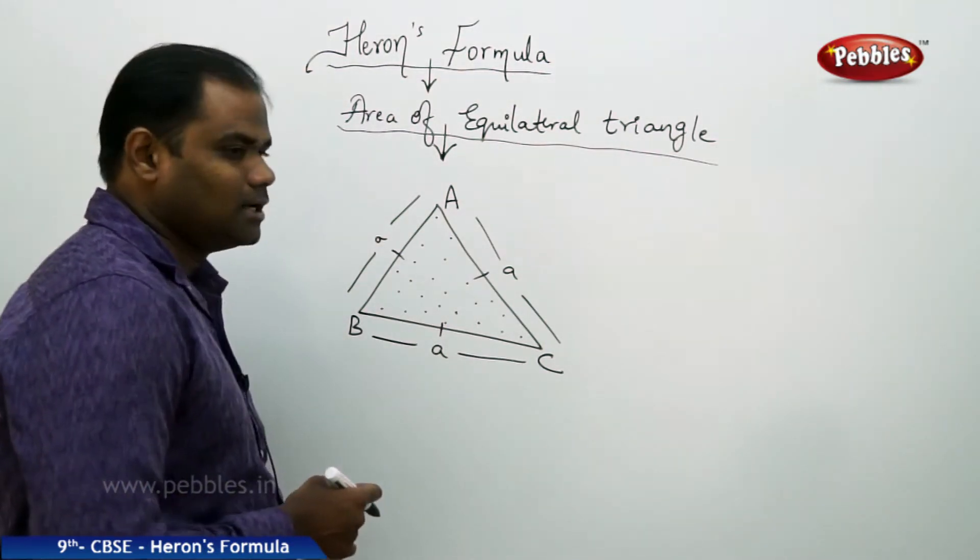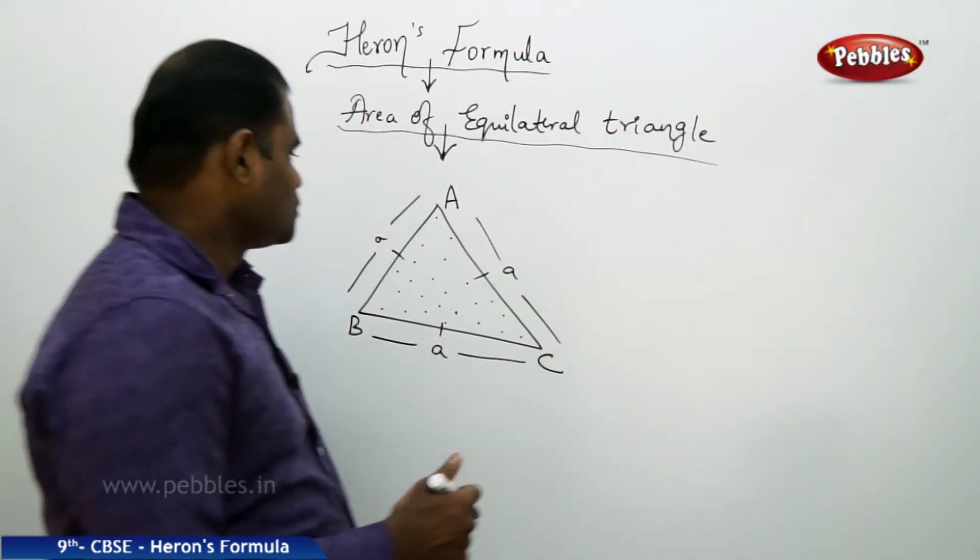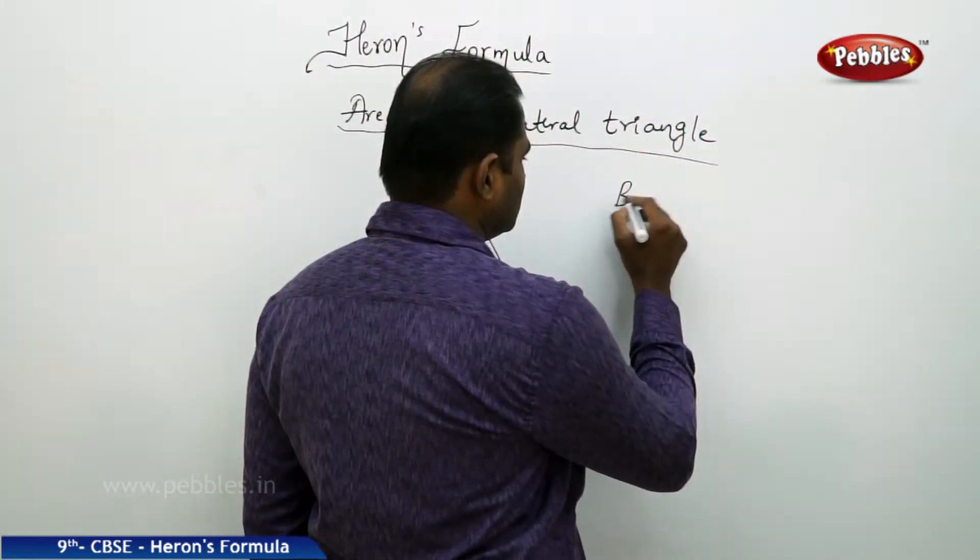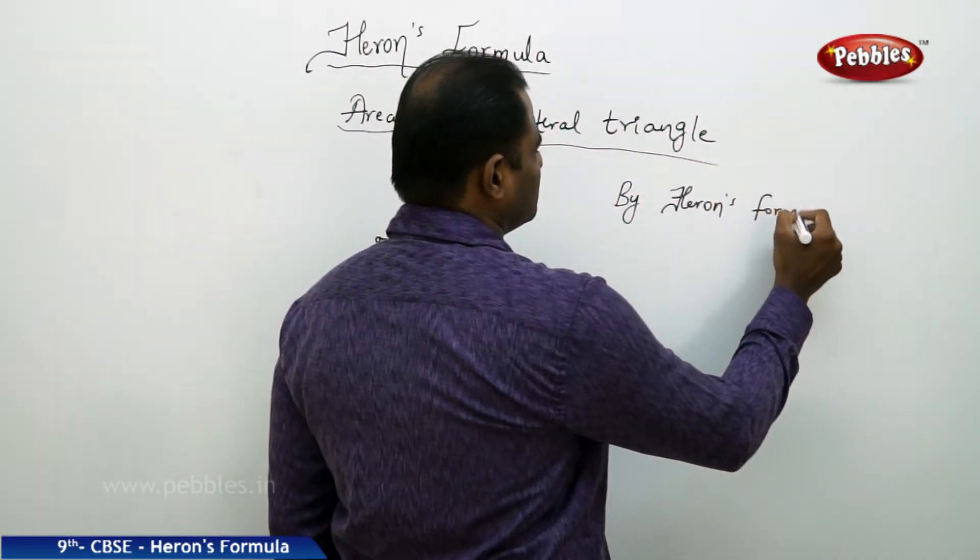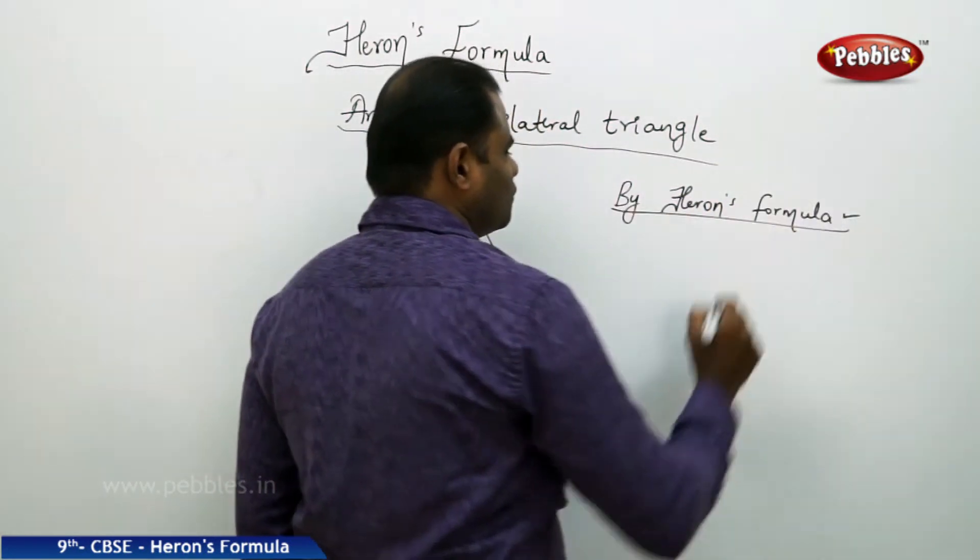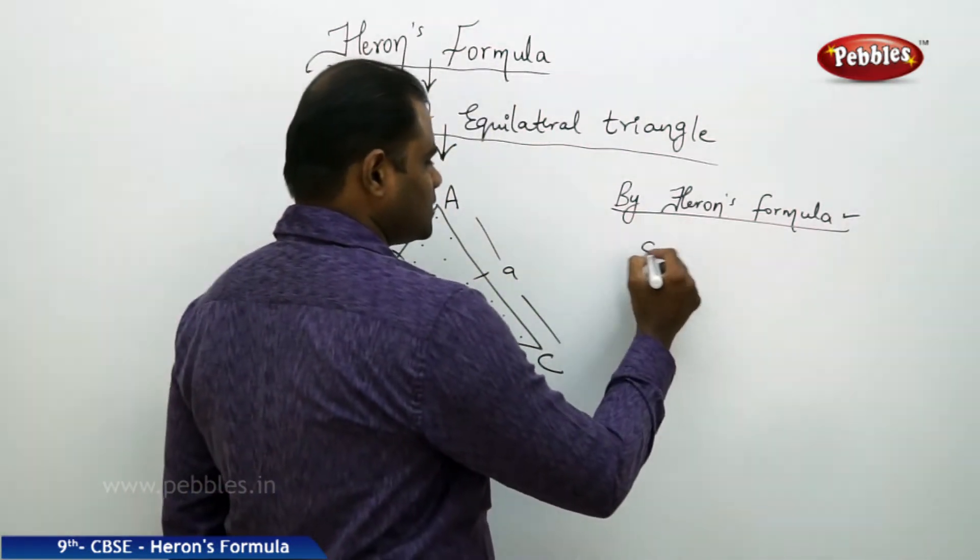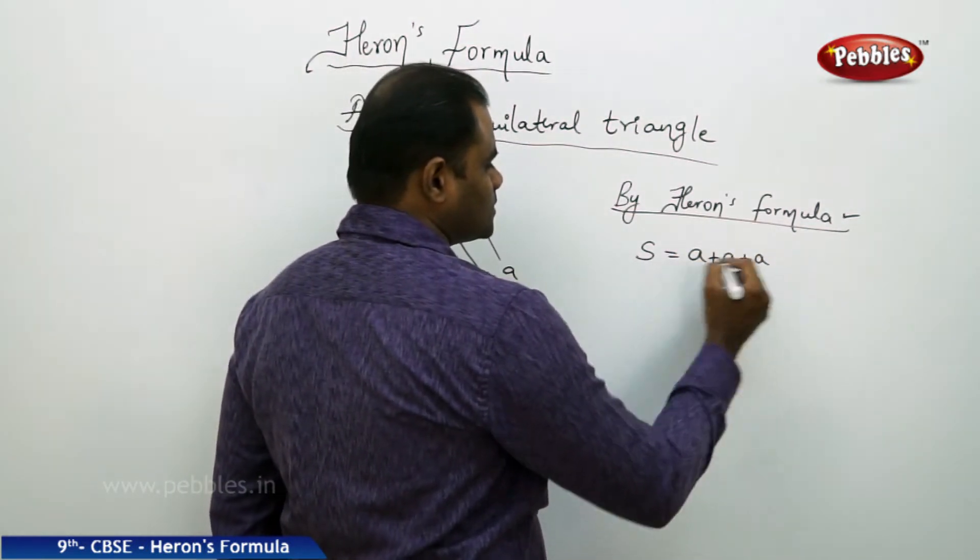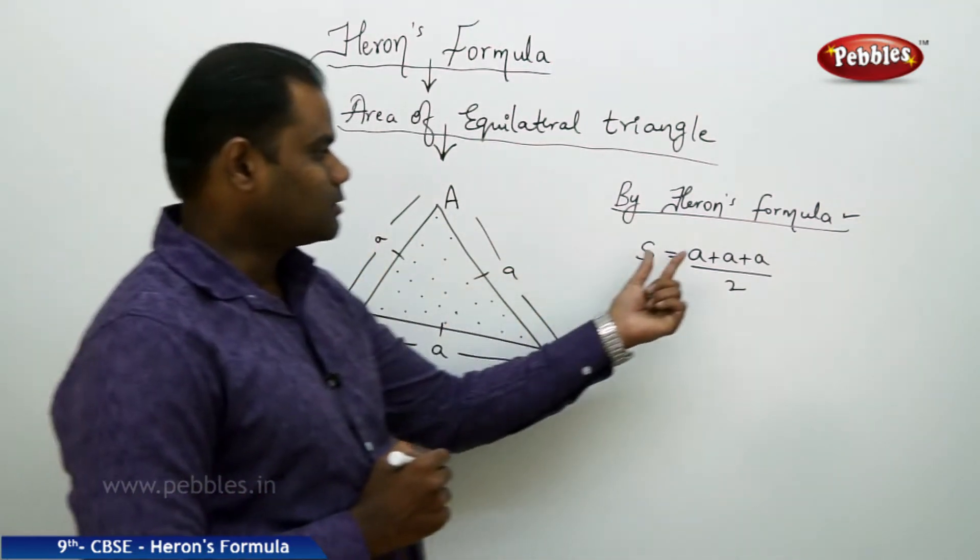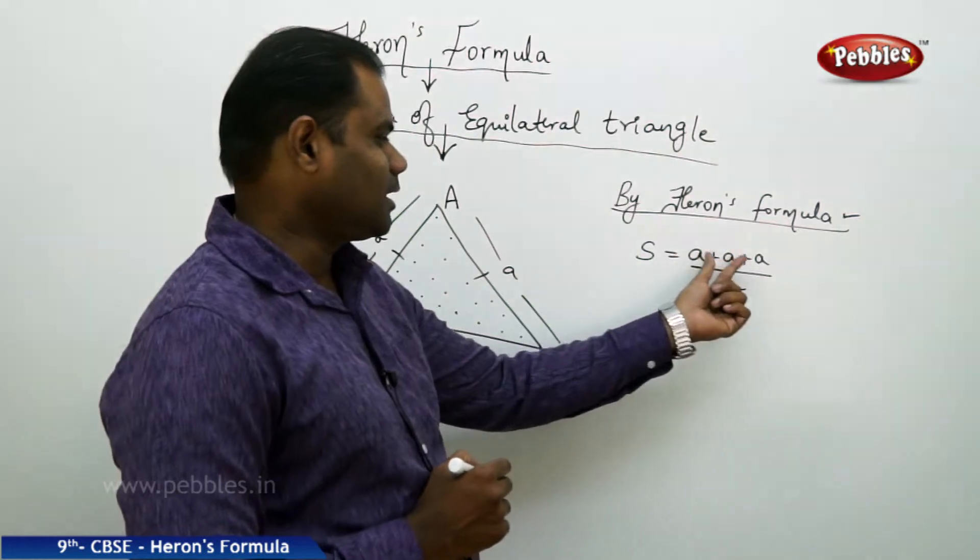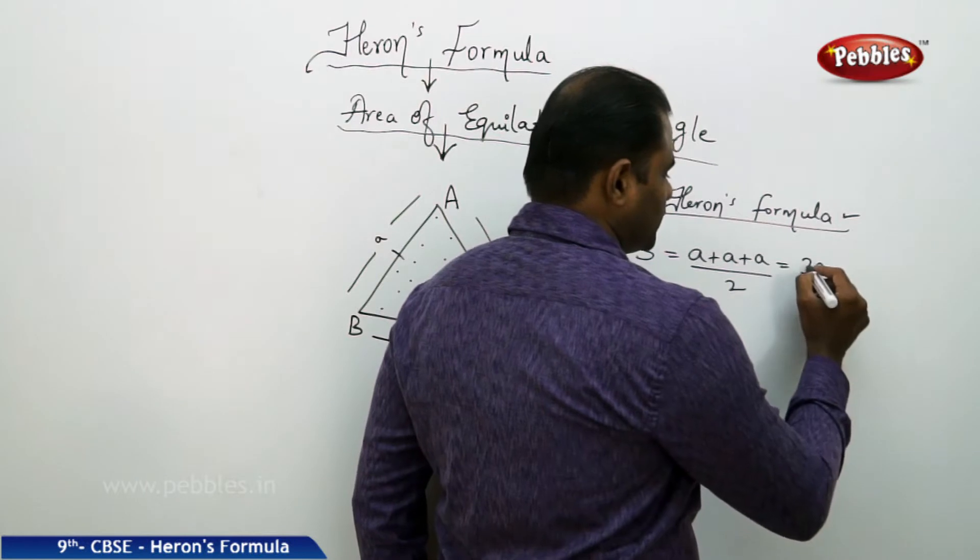So let's see how we can find the basic formula out here. Using Heron's formula, we know that the area of triangle is using the semi-perimeter. So S is A plus B plus C by 2. Because each of the sides is A, A, A, the sum of all the sides as the perimeter becomes A plus A plus A by 2 which is 3A by 2.